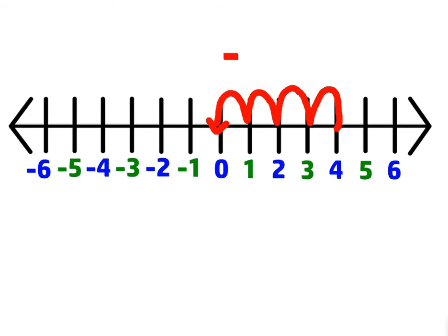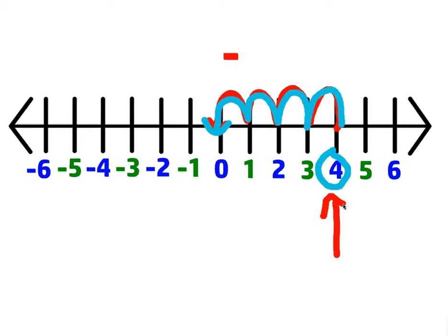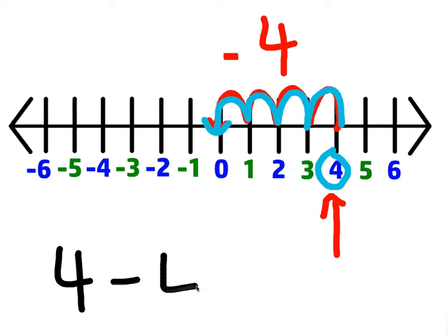If you start at the number 4, what number must you subtract to end up at 0? We started with positive 4, and the answer is always the number you start with. Any number minus itself is 0, so you must subtract 4. The way we write that out is 4 minus 4 equals 0.